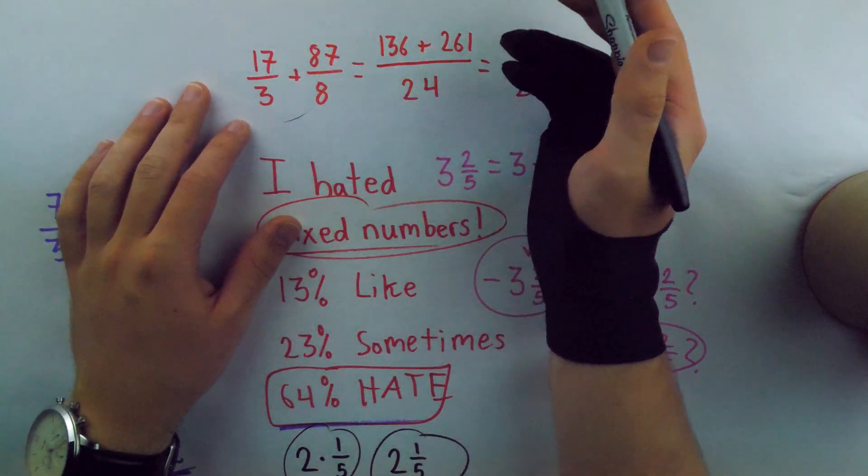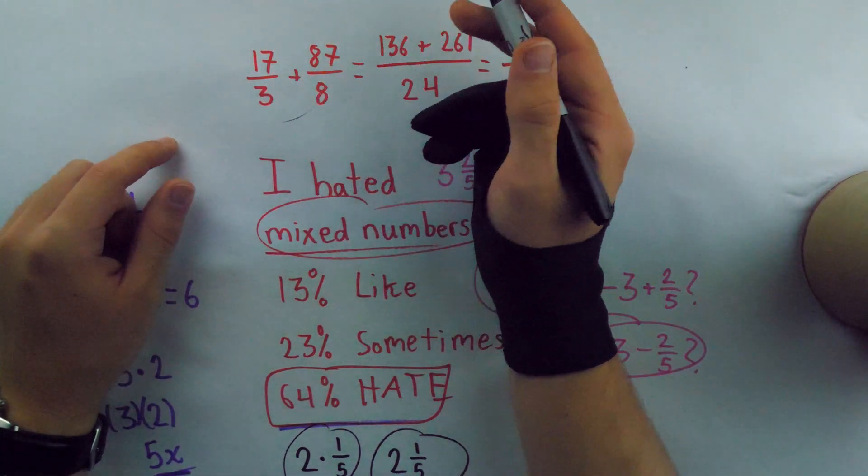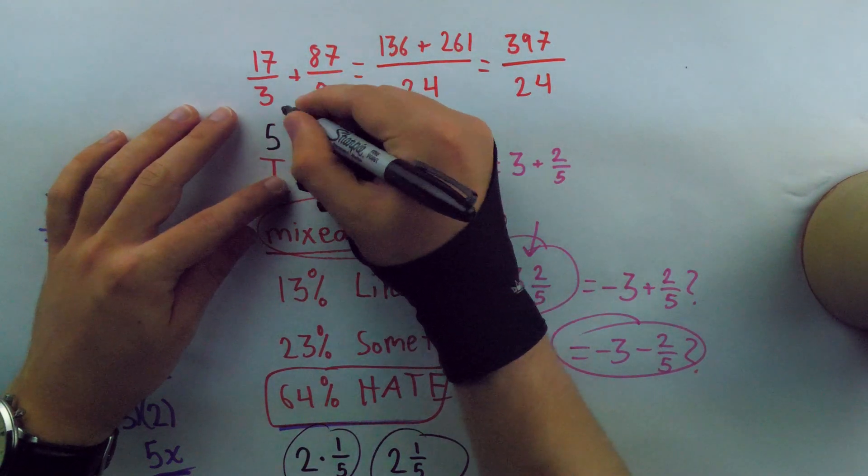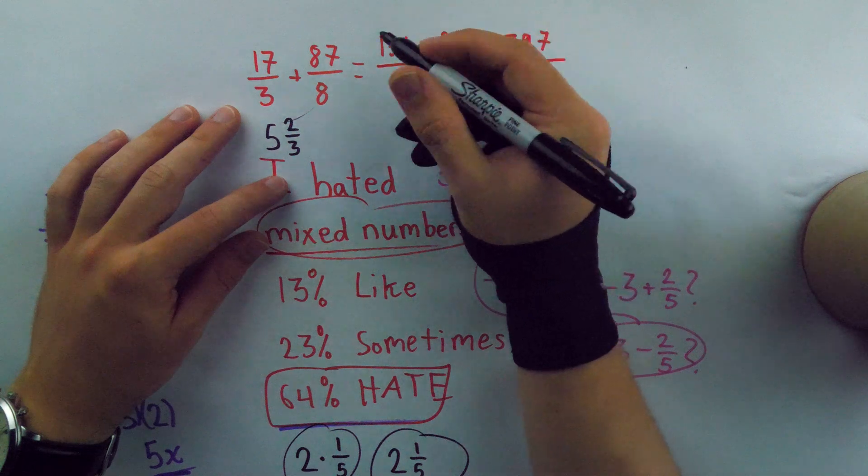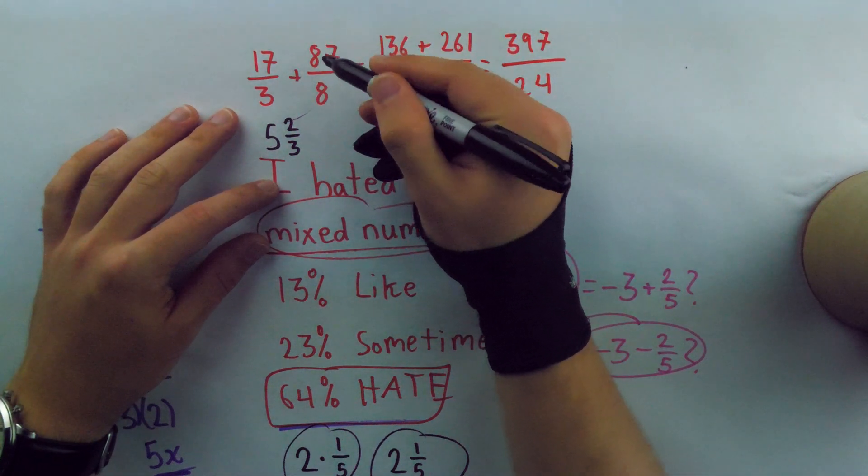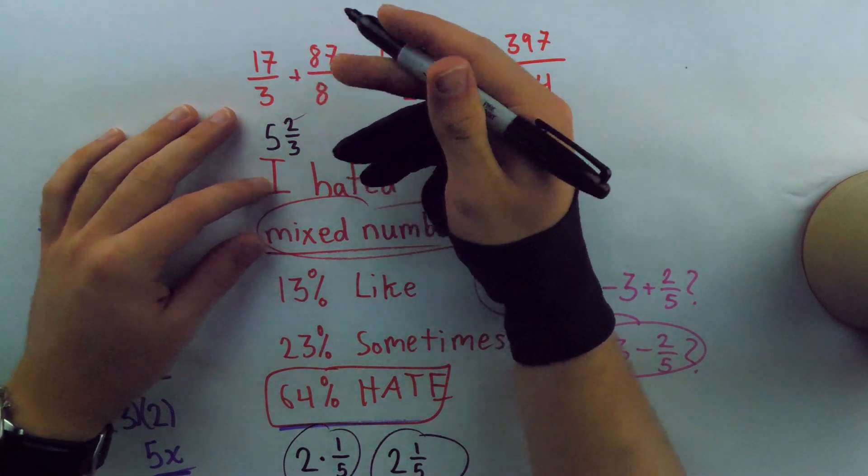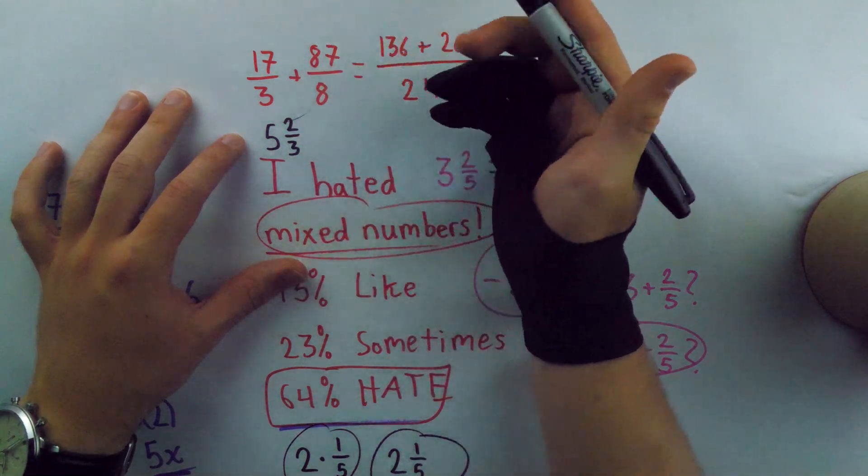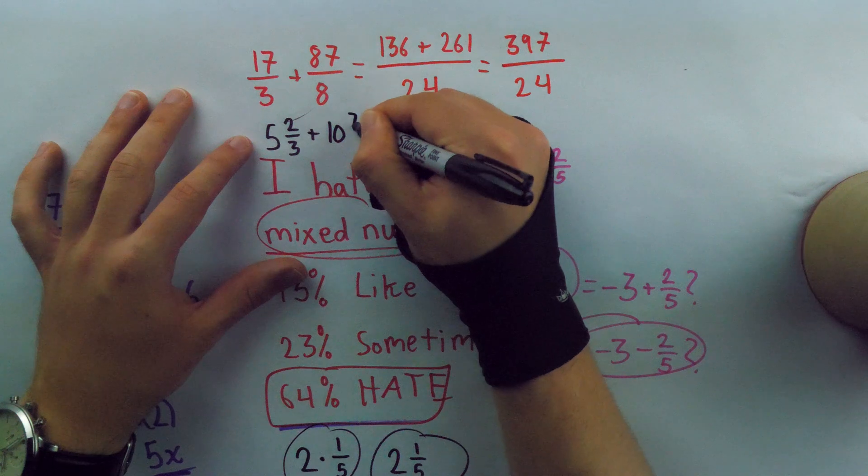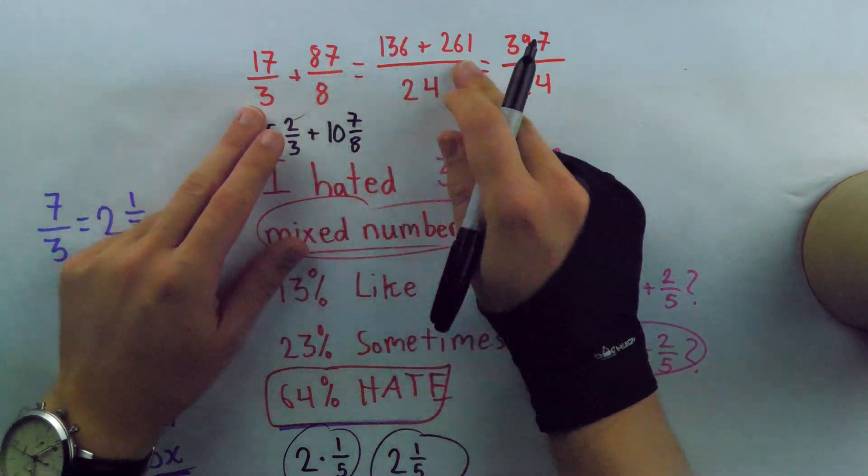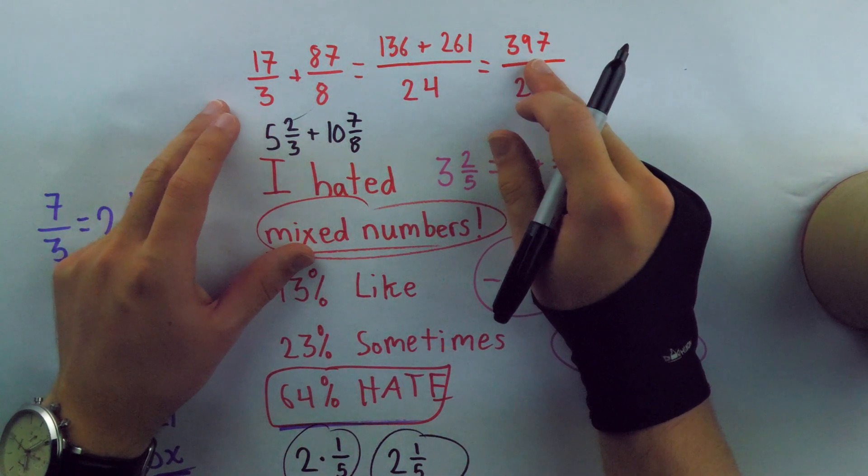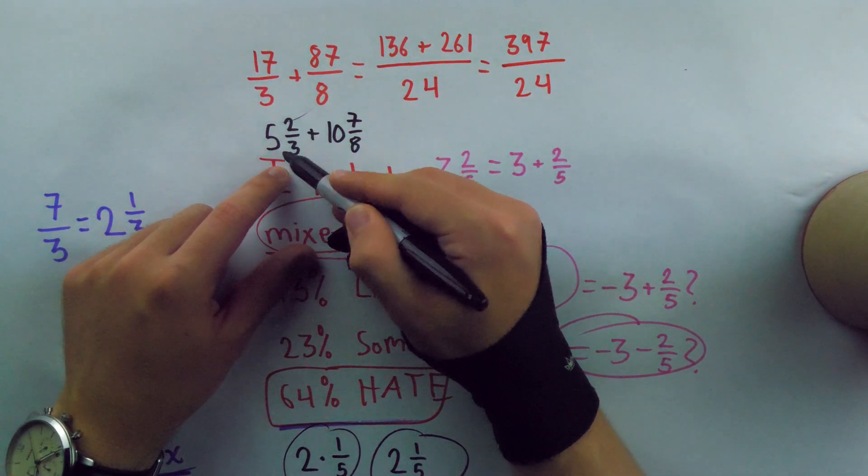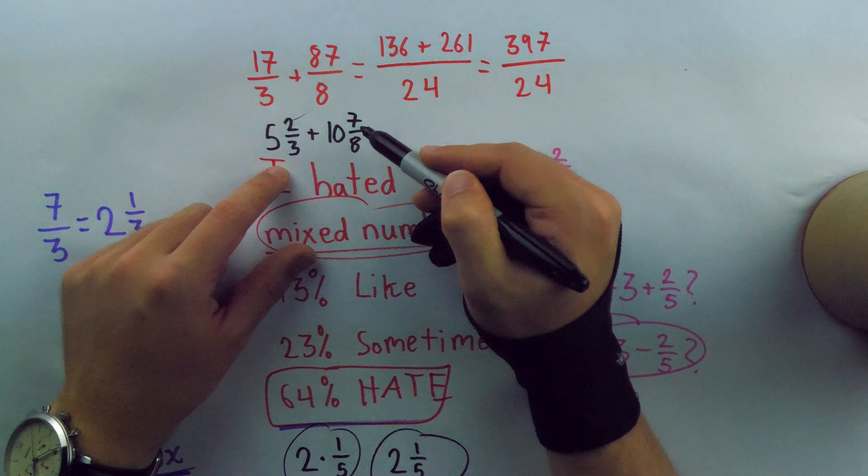So if I do this the mixed number way, I'm immediately going to turn these improper fractions to mixed numbers. 17/3 as a mixed number, well, 3 goes into 17, 5 times, with 2 left over. So it's 5 and 2/3. 87/8, 8 goes into 87, 10 times, with 7 left over. So it's plus 10 and 7/8. So all that improper fraction stuff we did with common denominators, we're still going to have to do that here. But we have to do it with much smaller fractions, 2/3 and 7/8.